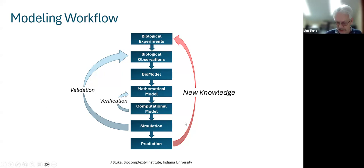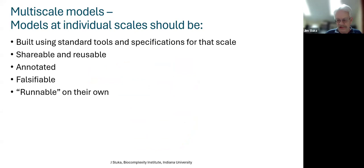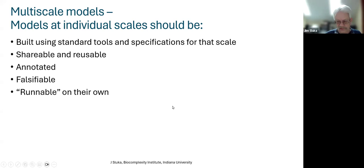We're ready to develop a multi-scale, multi-modal model. Some desired design characteristics: we'd like to use standard tools and specifications for each biological scale rather than hand-rolling our own code, which is hard to share, validate, and reuse. We'd like our code to be annotatable so we can assign biological meaning to individual entities. And for a multi-scale model, we'd like to be able to run individual scales standalone without needing the other scales — this makes debugging much easier.